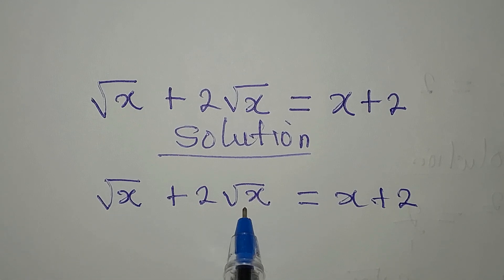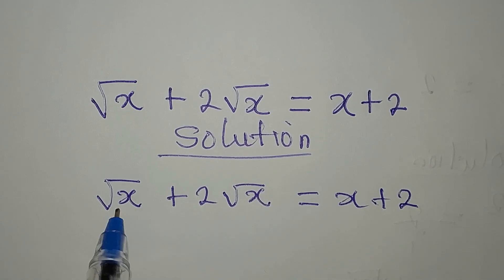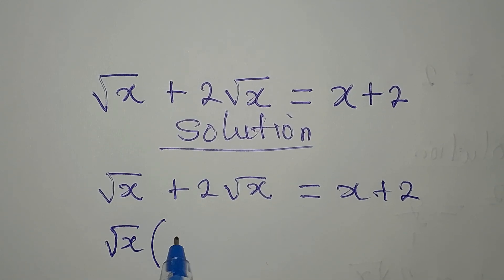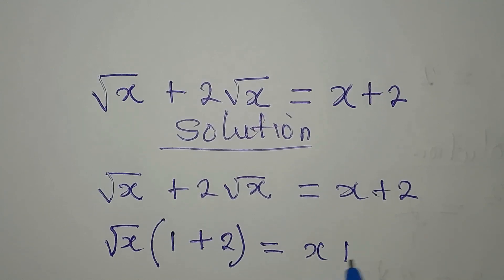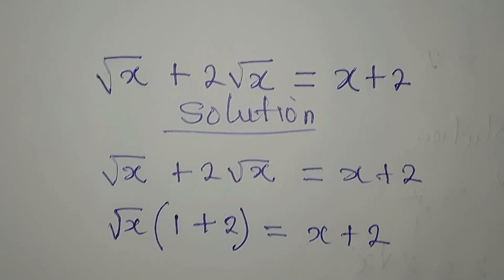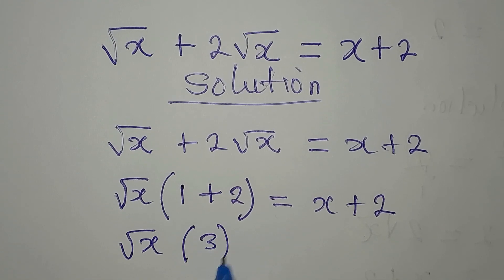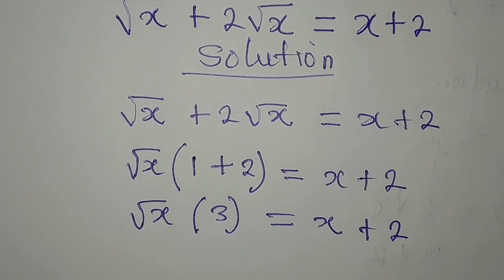These two terms can be added. We have root x appearing two times, so we factor it out: root x multiplied by 1 plus 2, which equals root x times 3, and this is equal to x plus 2.